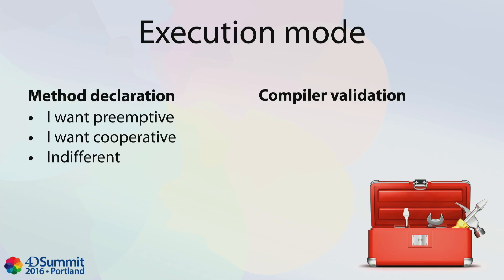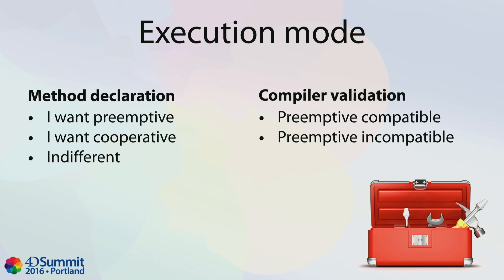This declaration is important because at compile time, the compiler will check what you are actually doing in your project method code to verify if it complies with your declared intention. The compiler will detect if you are using illegitimate 4D language commands. For example, if you say 'I want this project method to run in preemptive mode' but the compiler detects you are using OPEN WINDOW, it will issue a compiler error saying: you're calling a prohibited command, so this cannot run in preemptive mode.